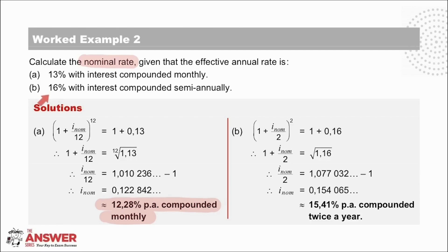In B, we are given that the effective interest rate is 16% per annum, and we must calculate the nominal rate if the interest is compounded semi-annually. We therefore divide by 2 and take it to the power of 2. Calculating carefully, we get a nominal interest rate of 15.41% per annum compounded twice a year.